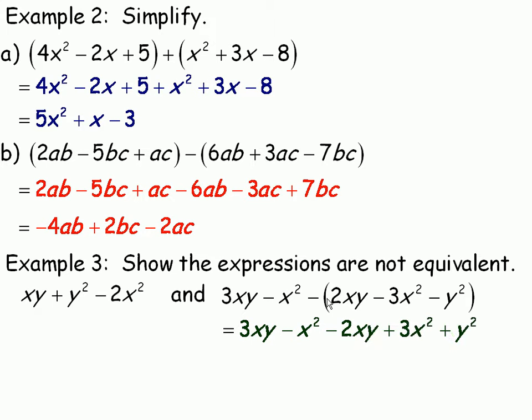I'll start by removing the brackets here. Remember this minus before the 2xy minus 3x squared minus y squared. We'll change all these signs. So this becomes minus 2xy. This becomes plus 3x squared. And minus y squared becomes plus y squared.